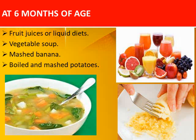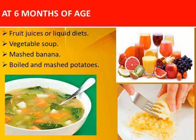What foods are we supposed to give? At the age of six months, we can give foods that are locally available at home, like fruits and vegetables. We can give mashed bananas, which are easily available, and boiled and mashed potatoes.